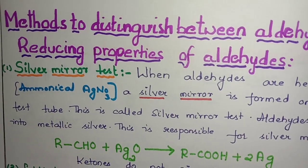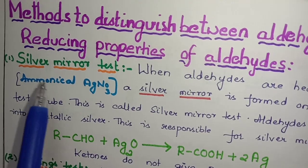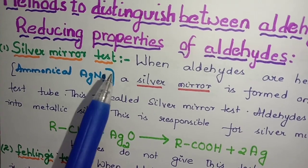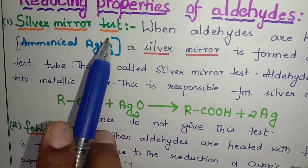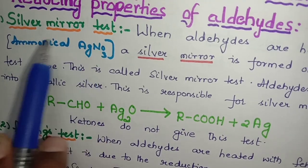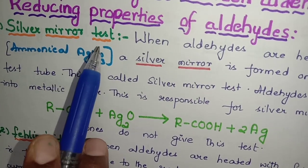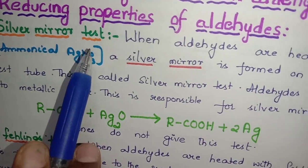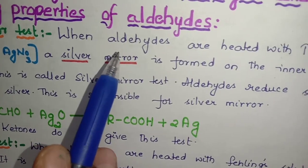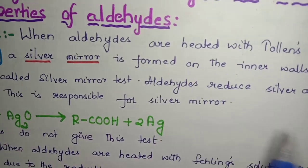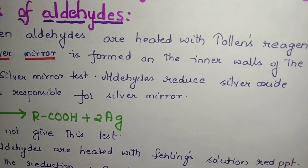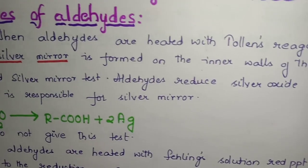Under this, the first one we have is silver mirror test, which can also be called Tollens test. What is this Tollens test? When aldehydes are heated with Tollens reagent, what is Tollens reagent students?